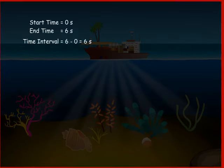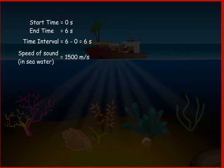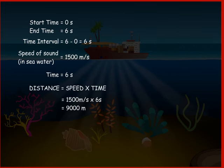The time interval between transmission and reception of the sound is calculated. By knowing the speed of sound in water and considering the time interval, the distance covered by the sound can be calculated using the formula: distance = speed × time.